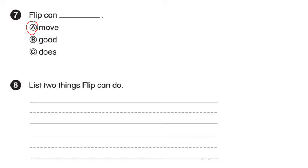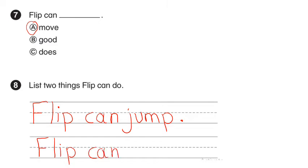Now, we have to list two things Flip can do. If you go back to the text, you can read again and just copy the sentences. I'm going to choose the first two sentences. We start our sentence with capital letter, and we write correctly between the lines. Flip can jump. This is only copying. Full stop. And the second one is Flip can tag.